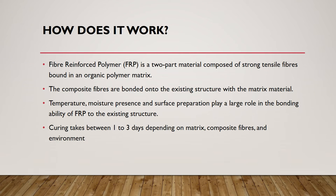Fibre reinforced polymer is a two-part material composed of strong tensile fibers bound in an organic polymer matrix. The composite layer is an engineered material made up of two or more constituent materials with different physical and chemical properties that attribute to the environment in which it is being applied. The different layers remain separate and distinct within the finished structure. The original polymer material, known as the matrix, is tough but relatively weak. Fibres are added in a woven or braided form to add reinforcement, elasticity, and strength to the material. The level of enhancement of the new material depends on the mechanical properties of the fiber and matrix, and their volume relative to one another.